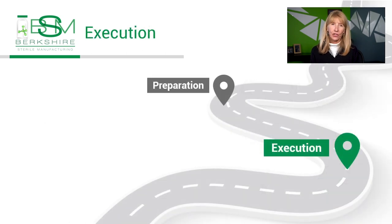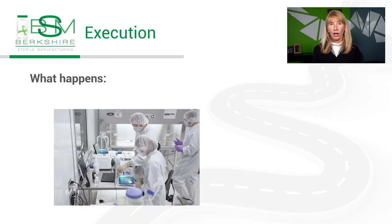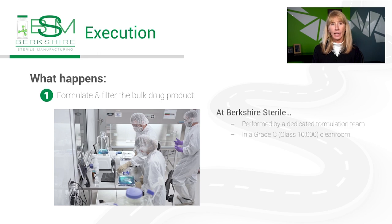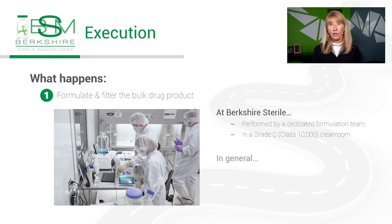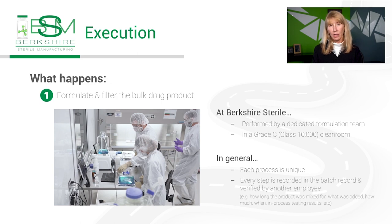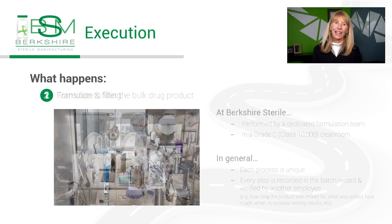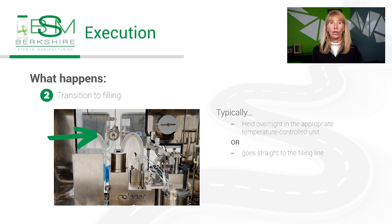If all goes well with the engineering run and all necessary changes to the batch record are performed, then you will be ready to begin your CGMP fill or run. The CMO's quality team will review and release all necessary quality documents including the batch record to prepare for the GMP run. The CMO will source all your materials involved in your fill and perform quality testing to release the products. As products come in, they will remain in the warehouse or respective temperature controlled units until activities begin. We now move on to the execution stage, which starts with formulating the bulk drug product.